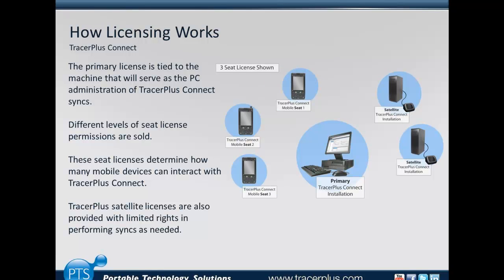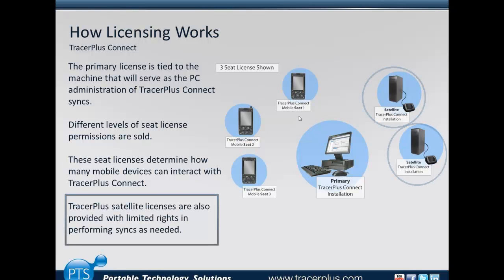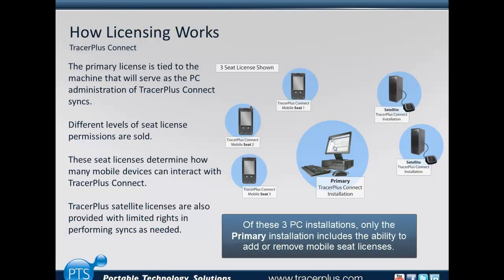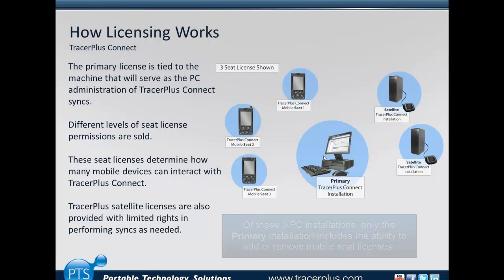With the license that's issued you can install Tracer Plus Connect on satellite PCs so that you can sync up with them as well. So if a three-seat license is purchased, you can install Tracer Plus Connect on three separate servers or PCs and on each one sync up those three clients out in the field. I'm going to show you how this works from start to finish. I'll jump over to my email client and show you one of the emails sent out from PTS that is used in requesting your registration code.